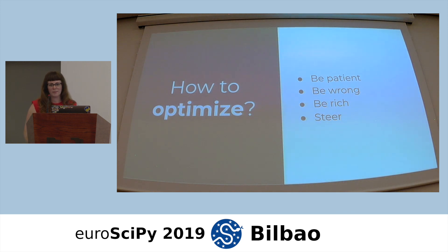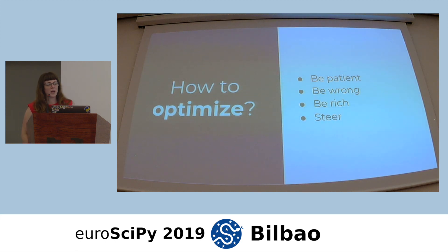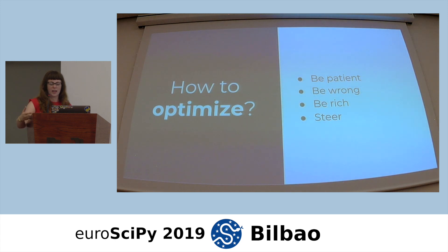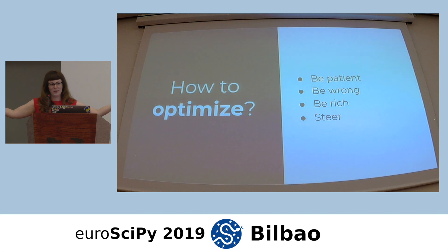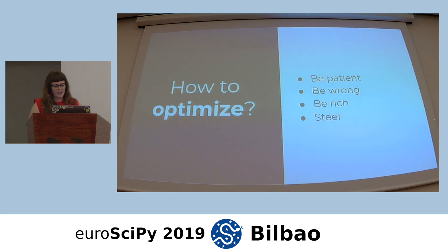What do we do about this problem? There are really only four solutions. You can be patient and just let it run for a really long time. You can be wrong — relax your qualifications and accept a lower F1 score for a model that fits faster. You can be rich — throw money at the problem and put everything in the cloud to run a big massive grid search. But what I would propose is that the superior choice is to do steering.